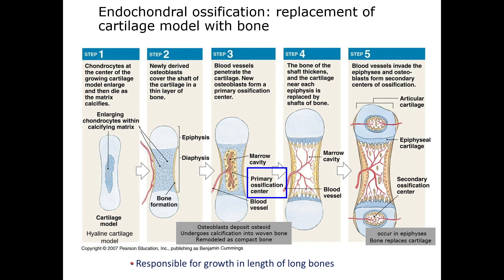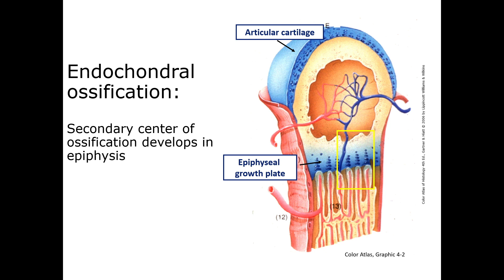After birth, blood vessels invade the end of long bones — the epiphysis — creating a secondary ossification center. A band of hyaline cartilage remains between the primary and secondary centers, serving to supply cartilage matrix for ossification. Bones increase in length until this plate of cartilage disappears. Here is a cartoon showing the enlargement of the secondary ossification center with the epiphyseal cartilage plate.